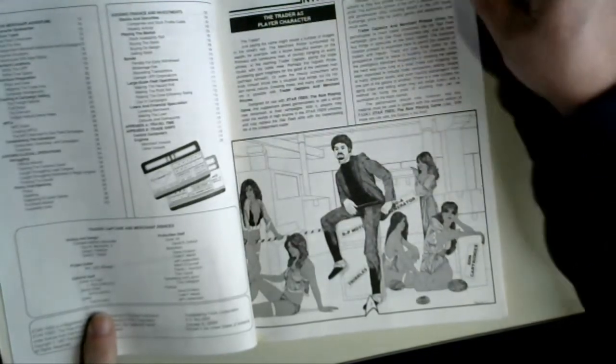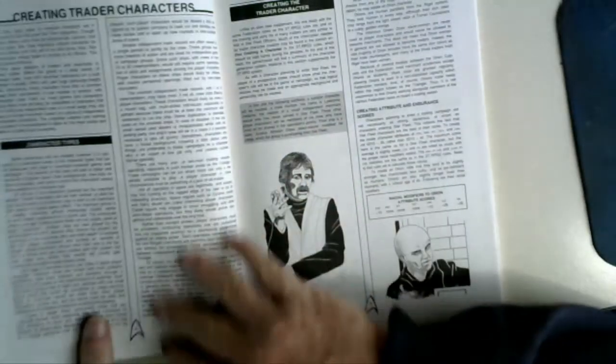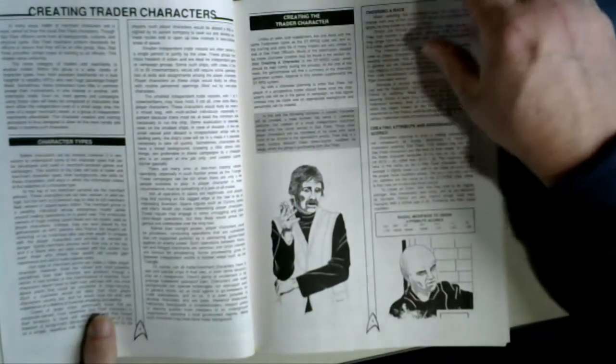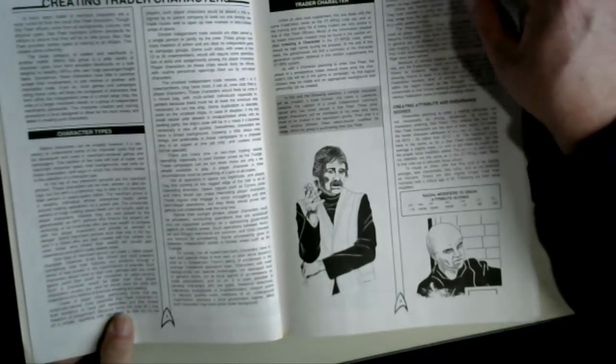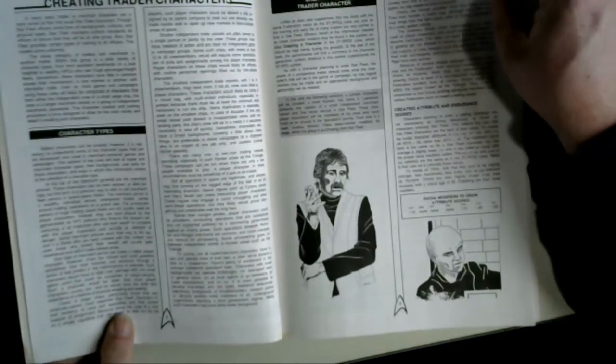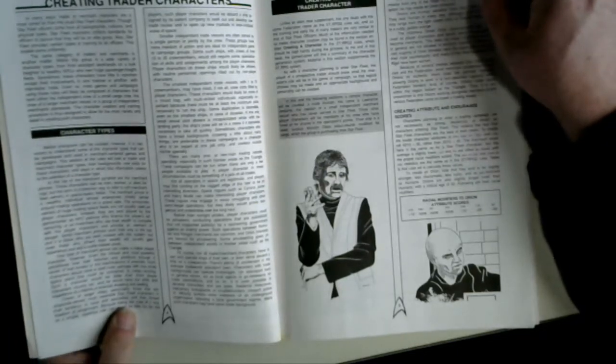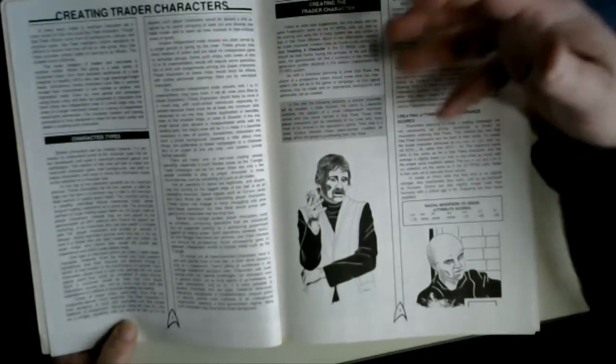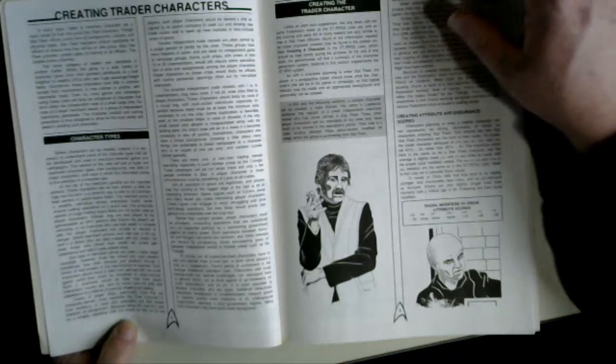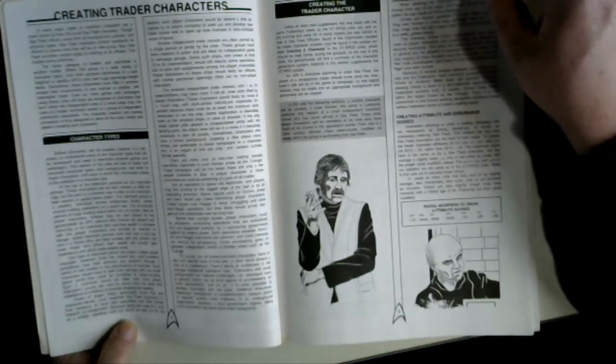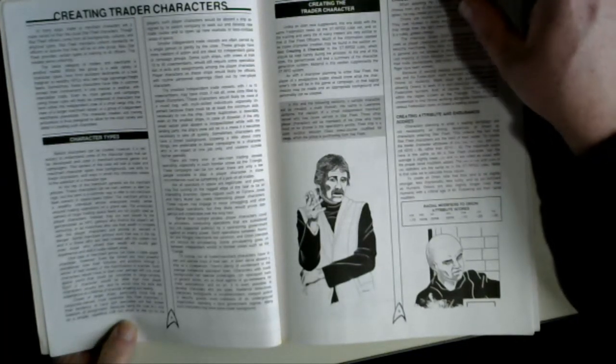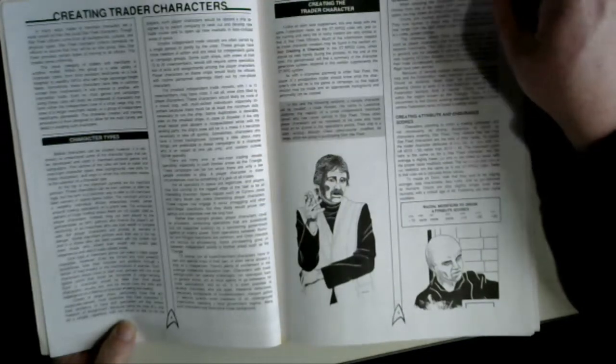Creating these and many other characters is possible with Trader Captains and Merchant Princes. This is a supplement to allow you to create NPCs and player characters that are not Federation personnel, that are not part of Starfleet or part of one of the other nationalities that in their military zone theory. You could have a Klingon Trader, you could have a Romulan Pirate, or whatever.